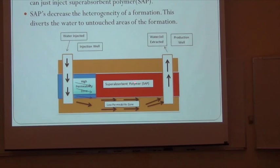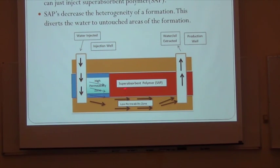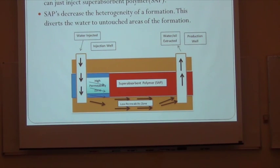When you inject superabsorbent polymer into the high permeability zone and then inject water from the injection well, the water will go to the high permeability zone, and the superabsorbent polymer will absorb that water. After some time, it will become a gel and block the pathway to the production well. Since you are still injecting water to the well, the water tries to go somewhere else, so it will go to the low permeability zone where we need it. Because of the pressure from the injection well, the rest of the oil will come out and you will get oil from the production well.